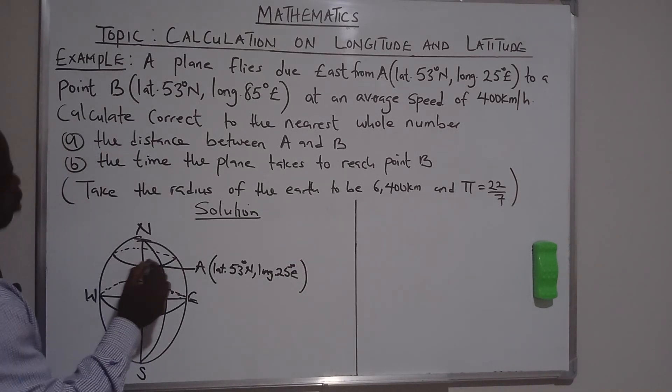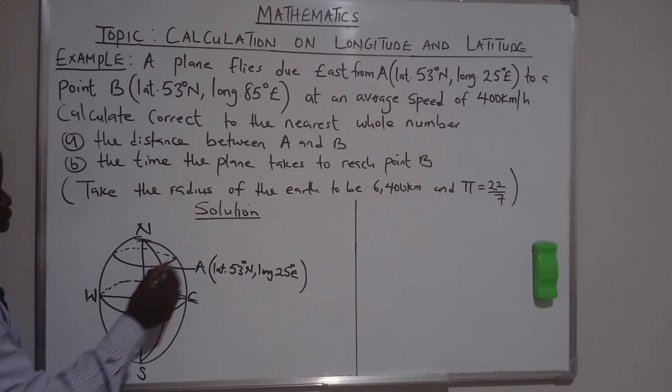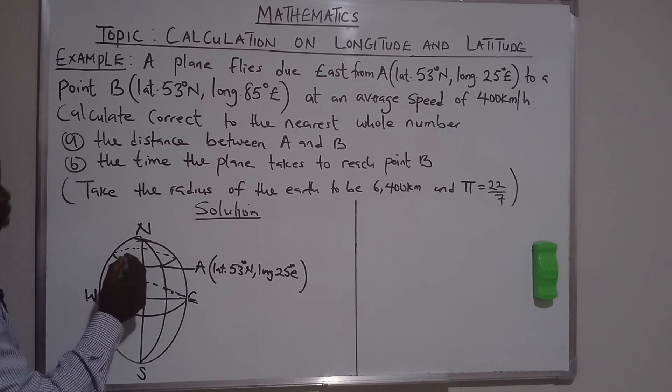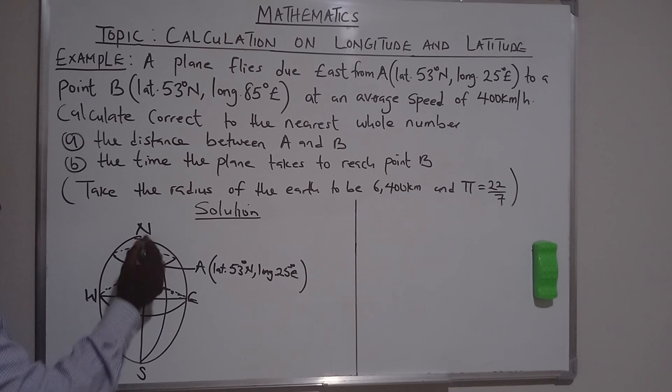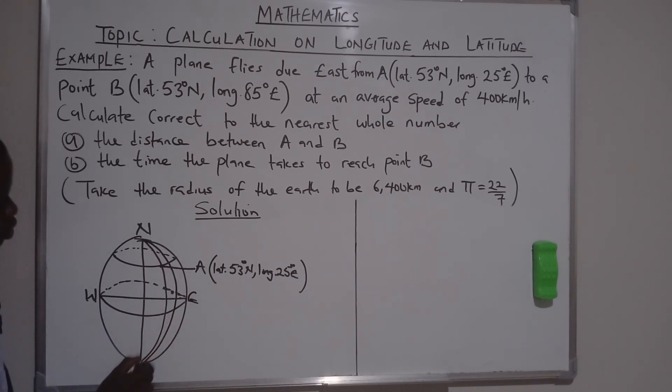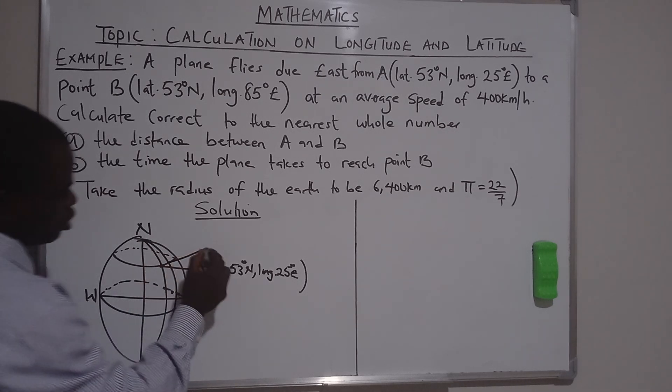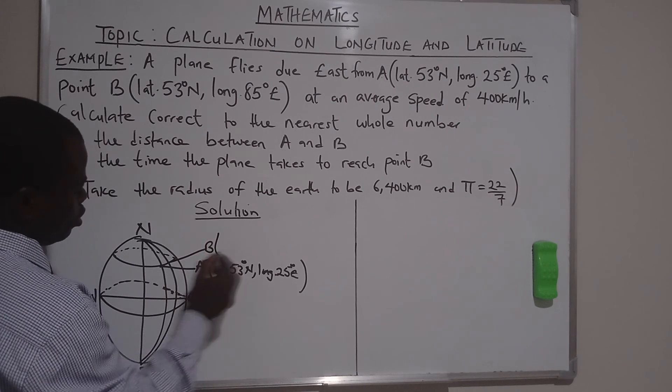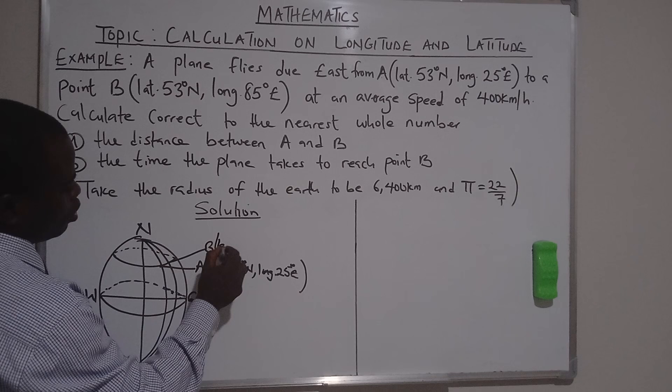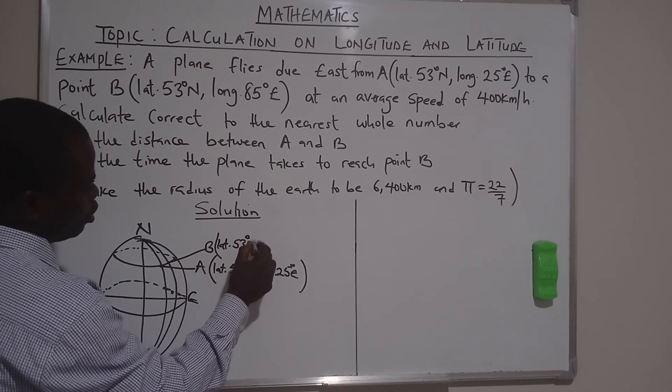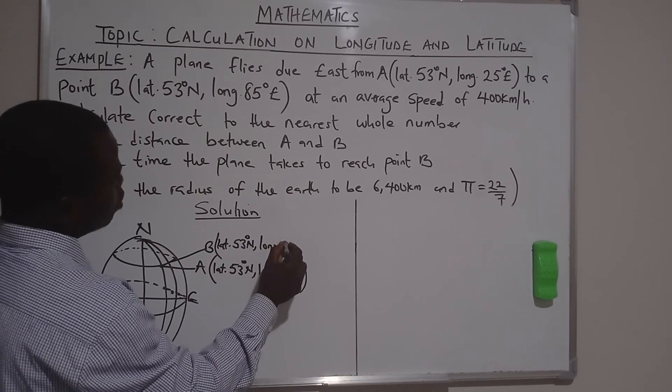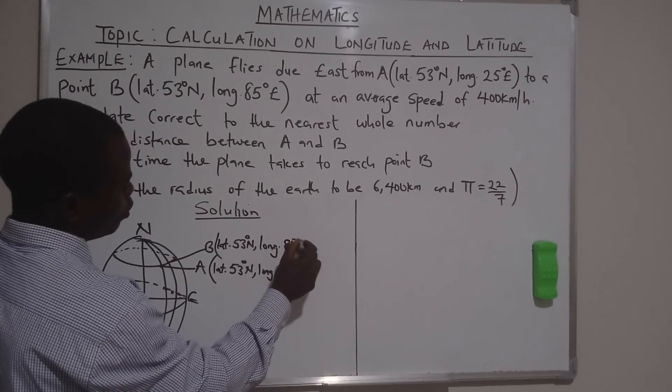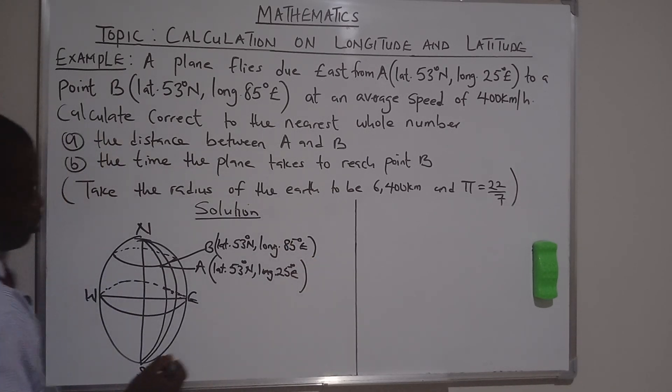To be point B, same latitude with latitude. And we have longitude, the same side east. Take the line here to be point B. Latitude 53 degrees north, longitude 85 degrees east.